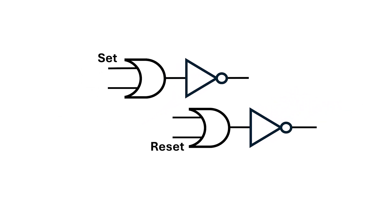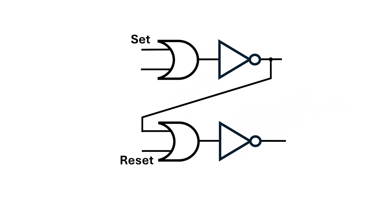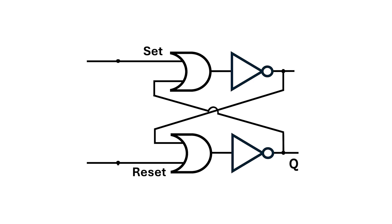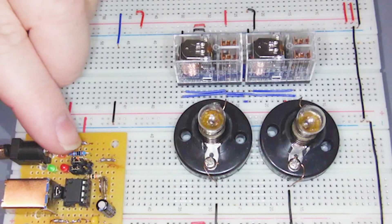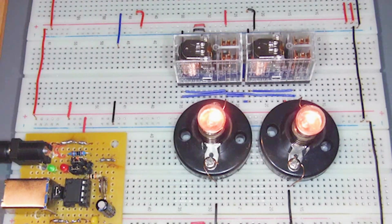This is called a set-reset latch, or SR latch. Now this is a significant improvement, but the SR latch itself can still be susceptible to undesired feedback and race conditions. For example, if I connect the Q output to the reset input and the Q-bar output to the set input, I've made this circuit with relays — let's see what happens.